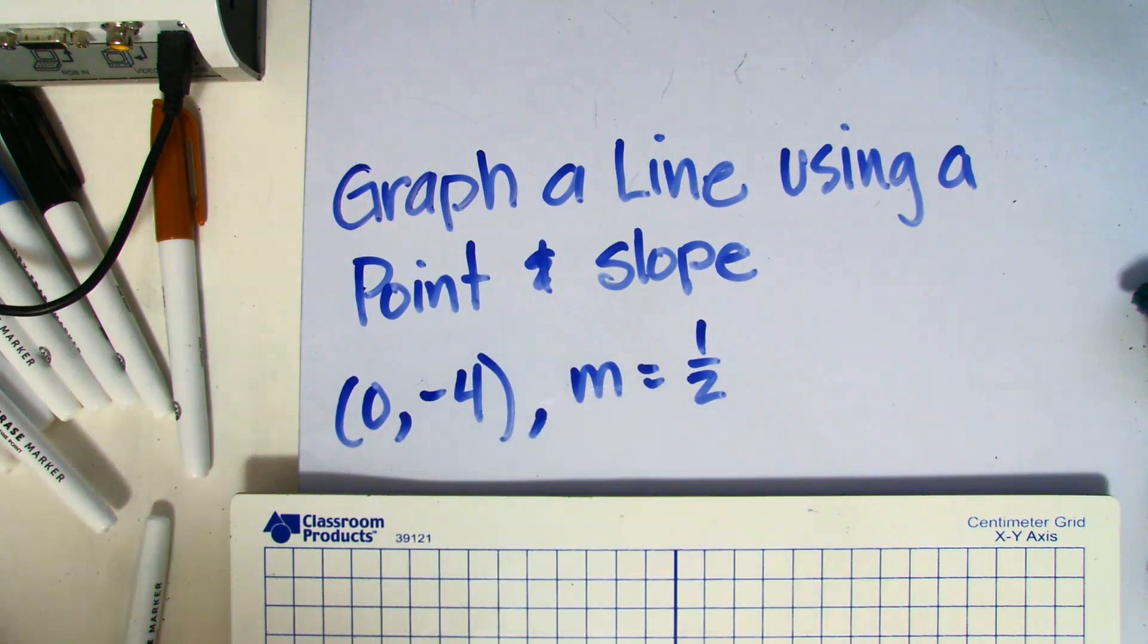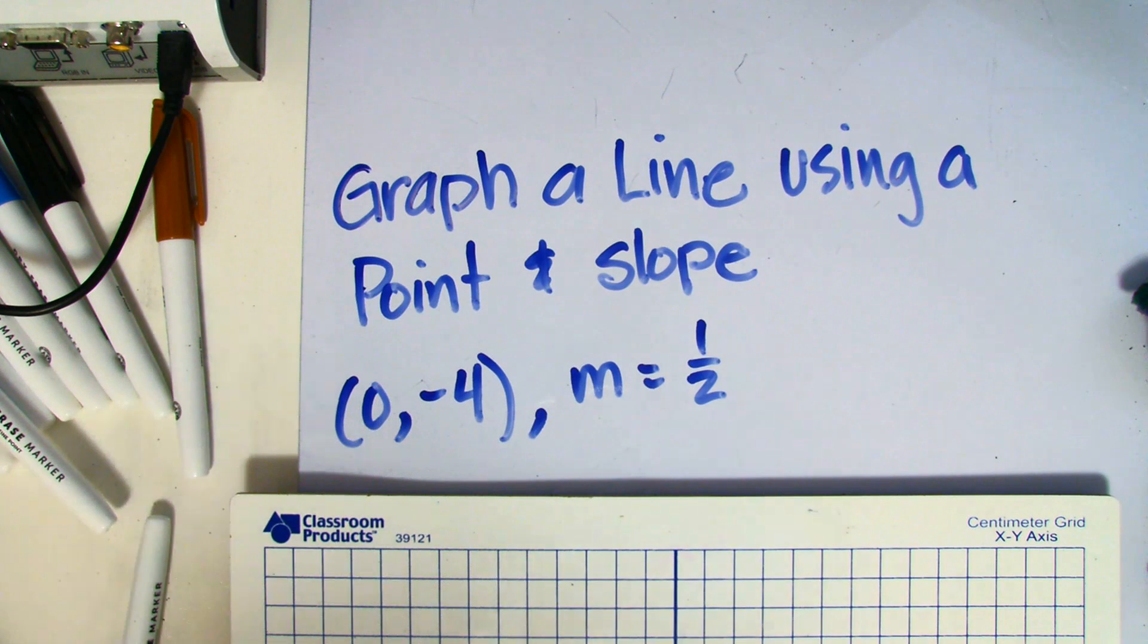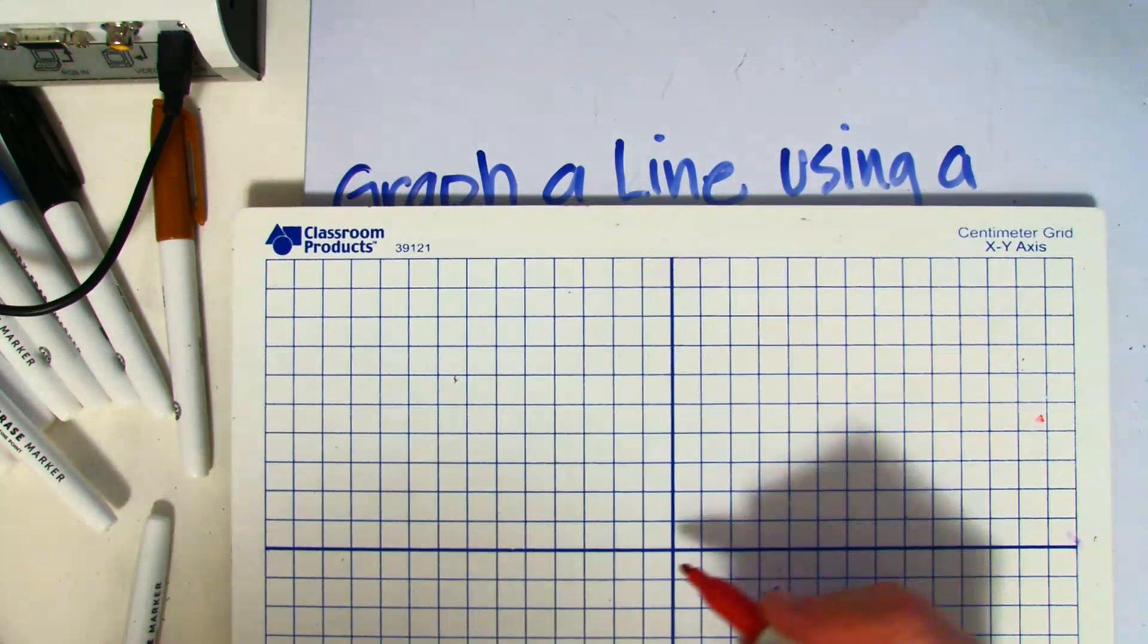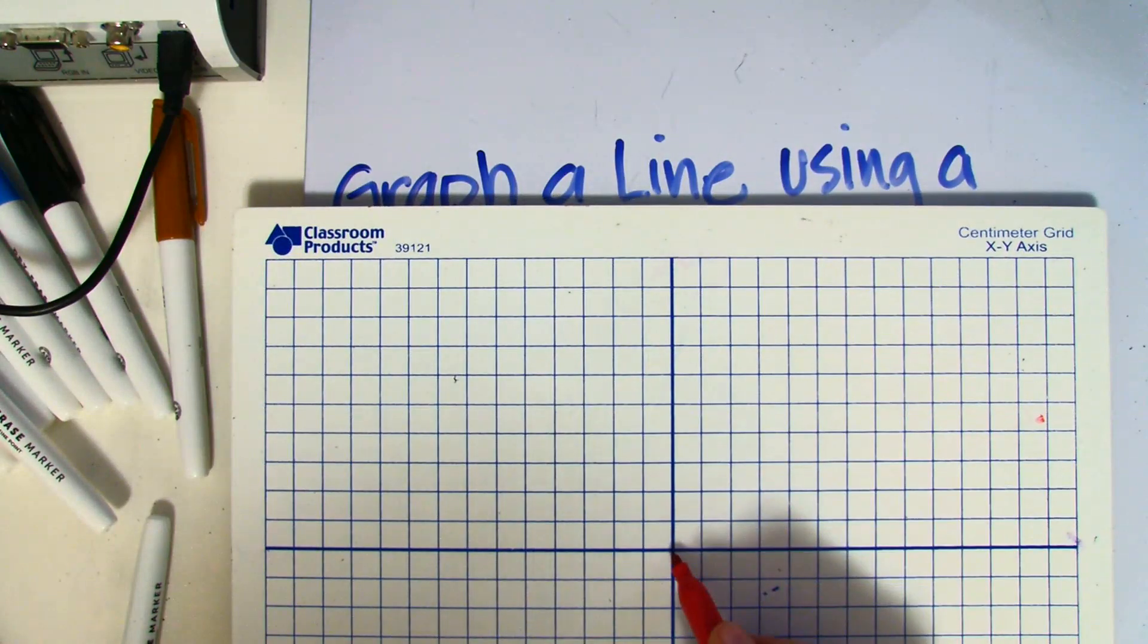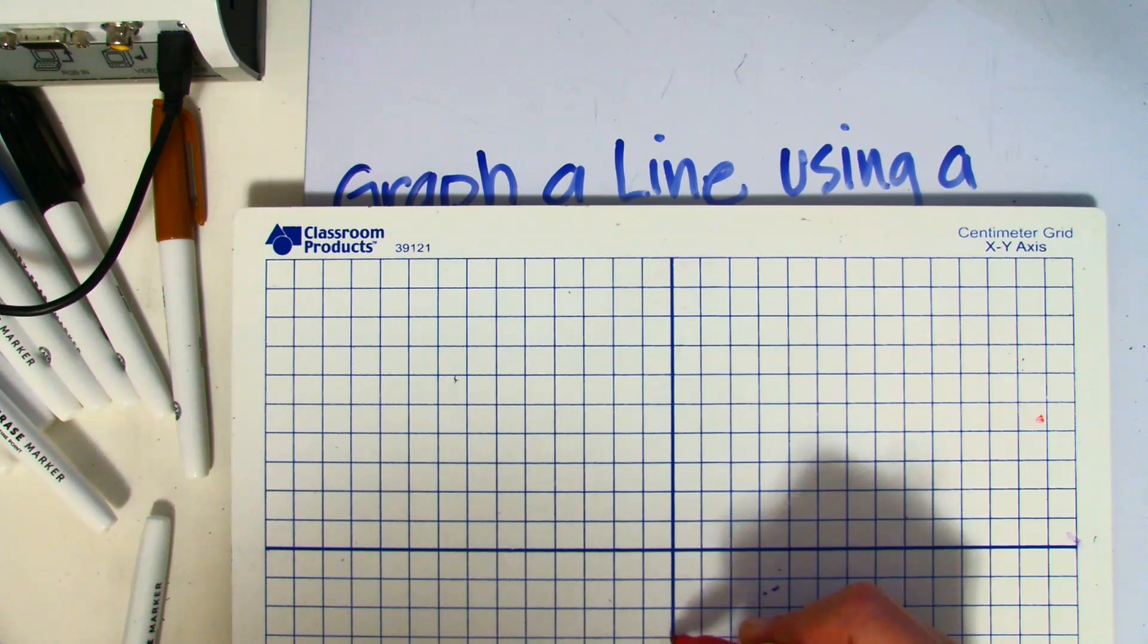What I'm first going to do is go ahead and plot this point on my graph. So (0, -4). Here is 0 on the x-axis, and I'm going to go down negative 4: 1, 2, 3, 4.